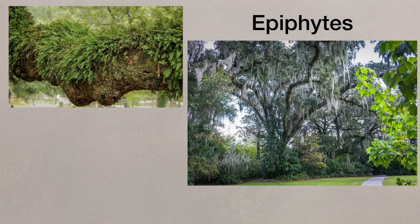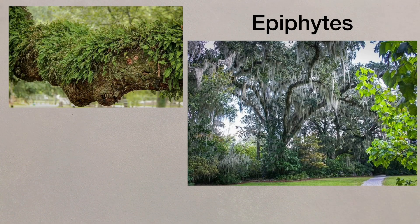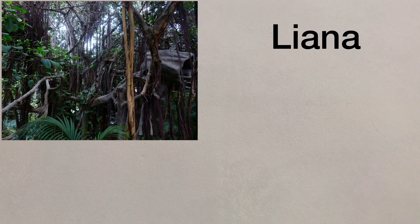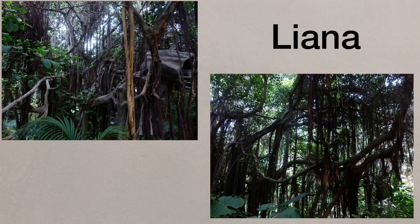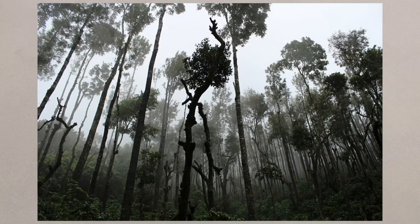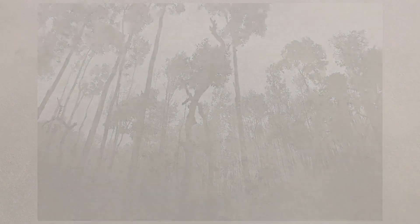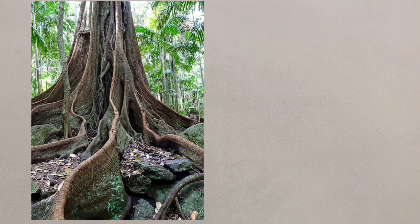Epiphytes are plants that live on branches of the trees, gaining their nutrients from the water and the air, whilst lianas have their roots in the ground but use the trees to climb up to the canopy. Rainforest trees are so tall that they need extra support, and this comes in the form of buttress roots — large, rigid roots coming out from the ground to help hold up the massive trees.